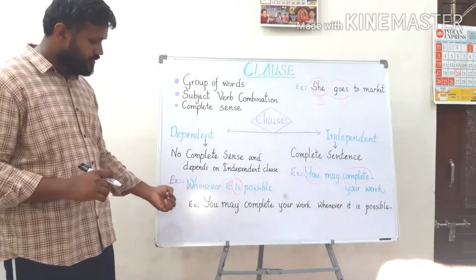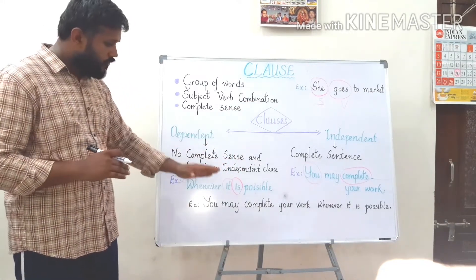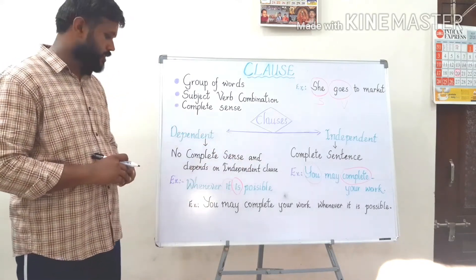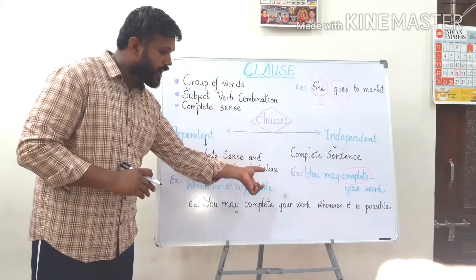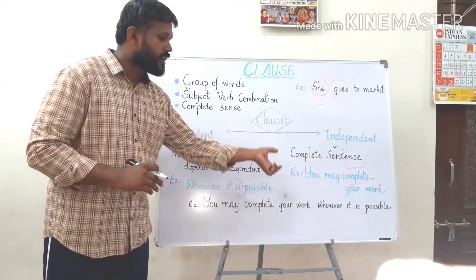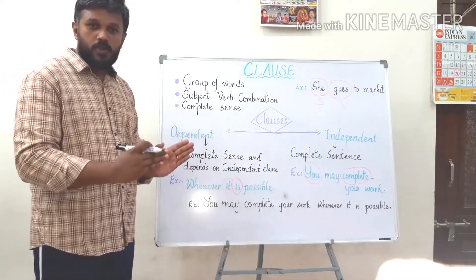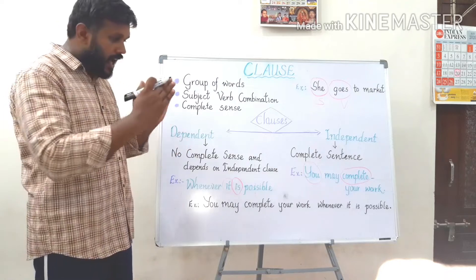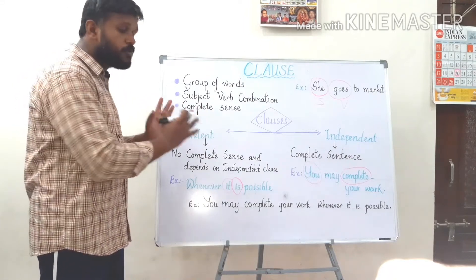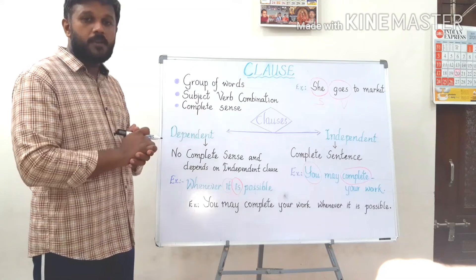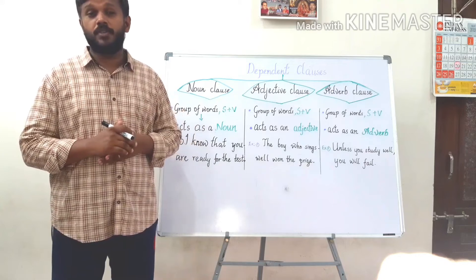Now we have a sentence: 'you may complete your work whenever it is possible.' We see in a sentence how a dependent clause is used. Here we have the main clause 'you may complete your work', and in addition to that a dependent clause 'whenever it is possible.' As it cannot stand on its own, it is used within the sentence. It is important because it gives additional meaning to the main sentence.